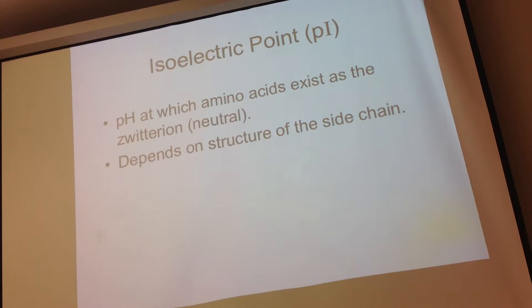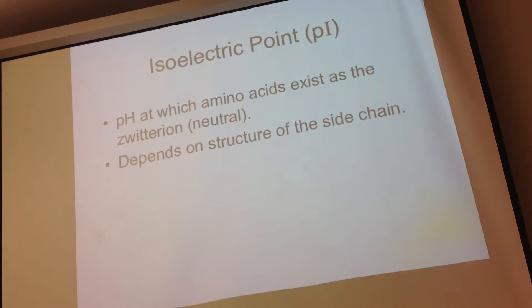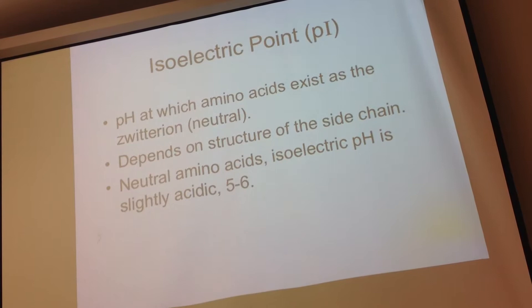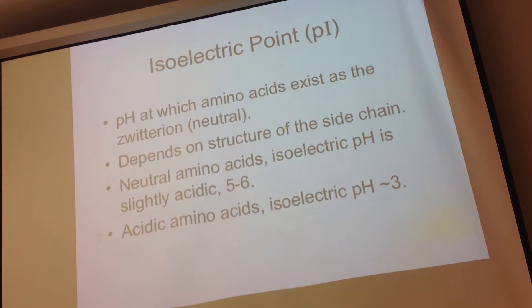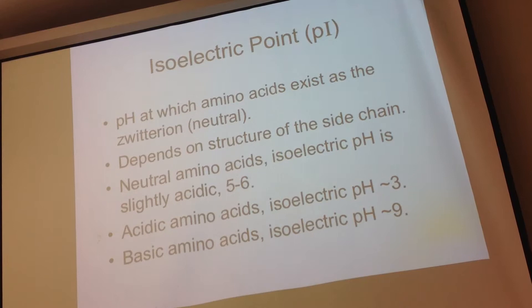What that isoelectric point is depends on the structure of the side chain. As a rough guideline: if the amino acid has a neutral side chain, the pI will be close to 7 but a little below — around 5 to 6. If it's an acidic amino acid, the isoelectric pH is lower, down around 3. And if the side chain is basic, the isoelectric pH is higher — up around 9, because the solution has to be more basic.